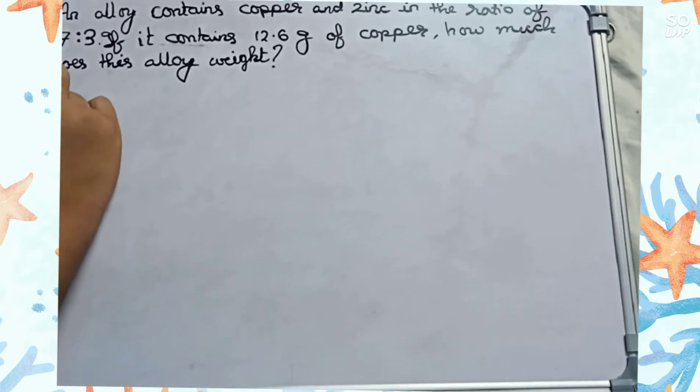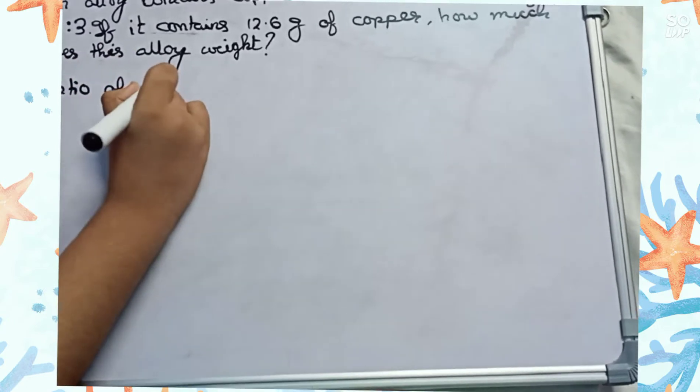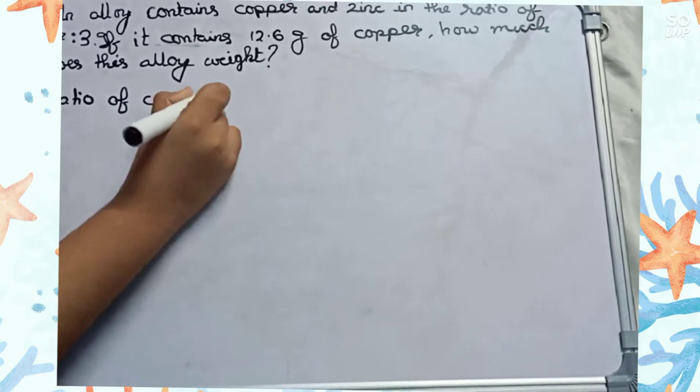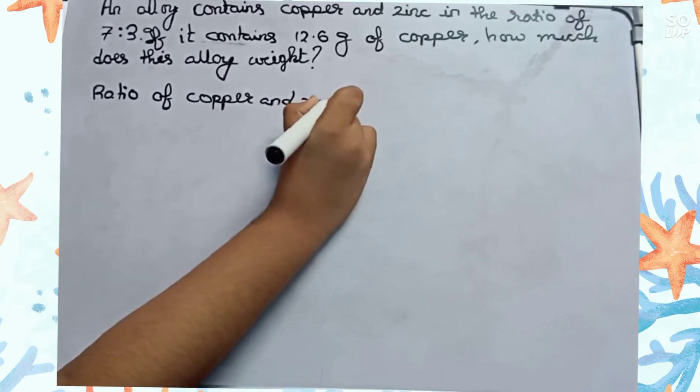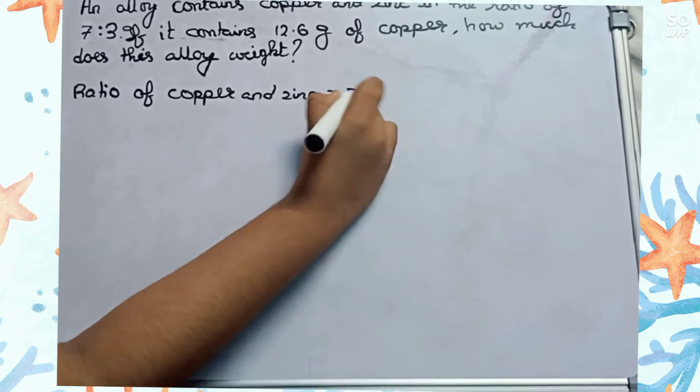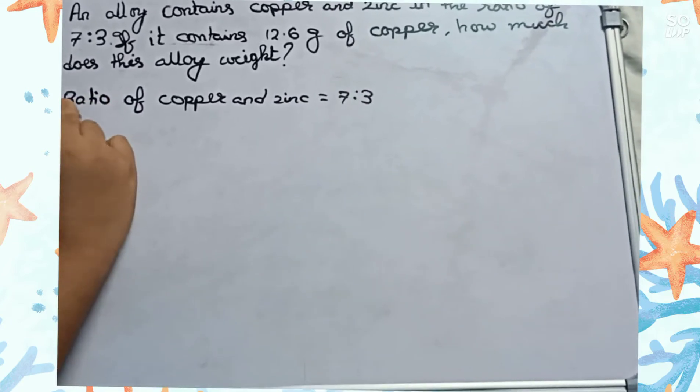Let's start. So the ratio of copper and zinc is given as 7 to 3. Therefore, ratio of copper equals 7.